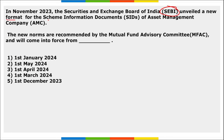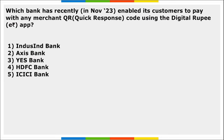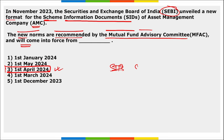Next: SEBI unveiled a new format for Scheme Information Documents (SIDs) of AMCs. The new norms are recommended by the Mutual Fund Advisory Committee and will come into force from 1st April 2024. SIDs contain detailed information about the scheme's investment objective, asset allocation pattern, investment approach, risks involved, fund managers, fees, and expenses.